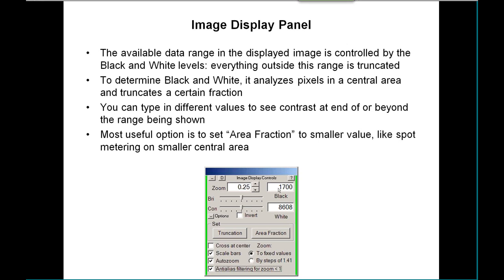More useful in a general sense is to adjust the area fraction to select a smaller value, so that it's like spot metering on a smaller central area. That's usually the most successful for seeing what's inside of a cell that's embedded in resin that's taking up too much of the area around it.